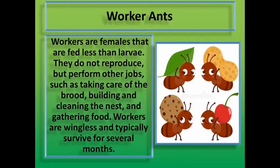Worker ants are females that are fed less than larvae. They do not reproduce, but perform other jobs such as taking care of the brood, building and cleaning the nest, and gathering food. Workers are wingless and typically survive for several months.